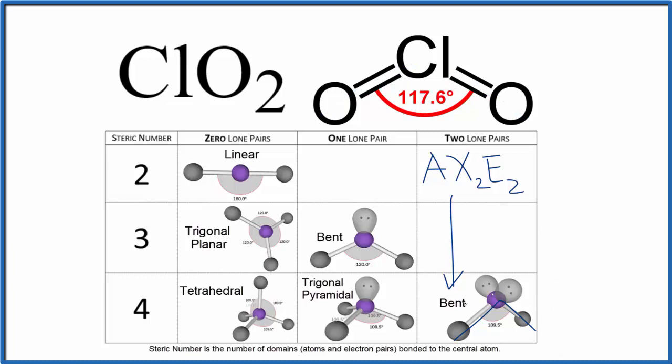So to recap, we have a bent molecular geometry and a tetrahedral electron geometry. This is Dr. B. And thanks for watching.